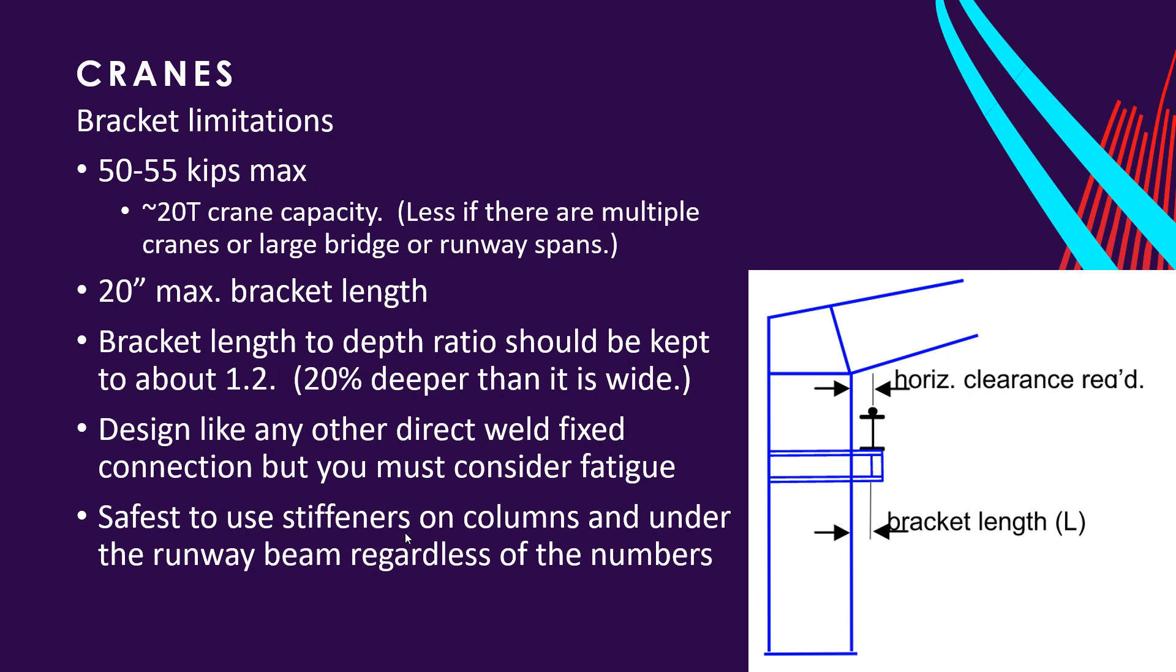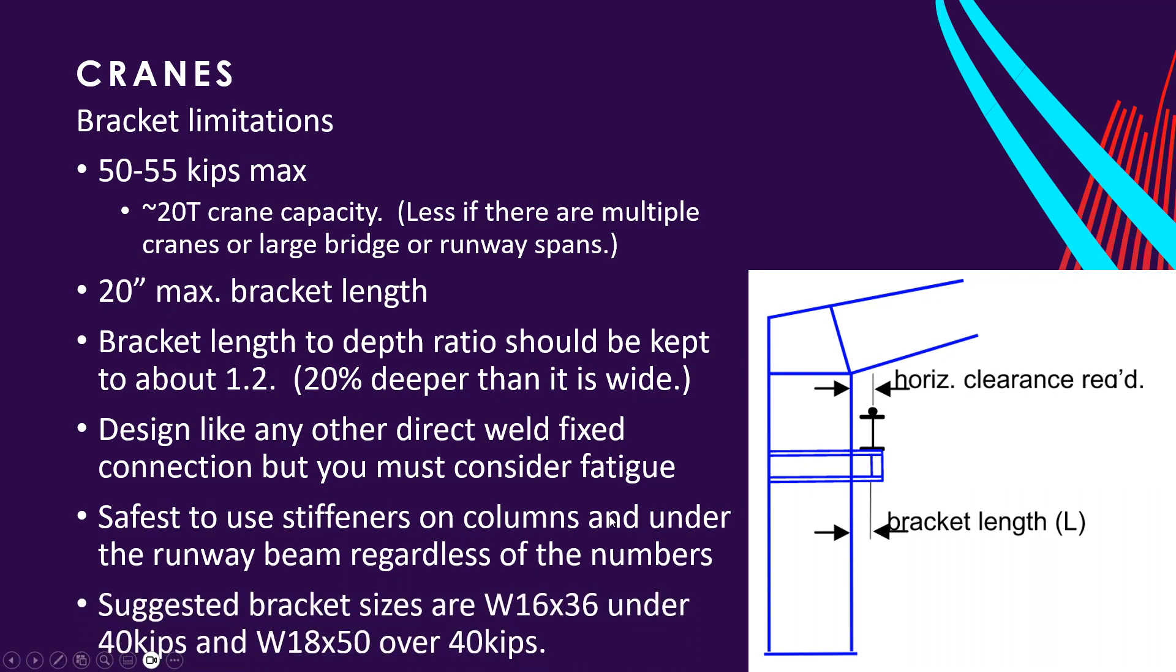So just throw the stiffeners in. We're not talking about big money here, but if something does go wrong, the welds start to crack, the flanges start to crack. I mean the solution will be to throw in stiffeners, right? So just throw them in from the beginning. It's just cheap insurance. My suggestion for bracket sizes are W16-36 under 40 kips and a W18 by 50 over 40 kips, keeping in mind of course that I'm thinking about 55 kip max. If you're going to exceed that, there's nothing in the rule book that says you can't. But these are good starting places.